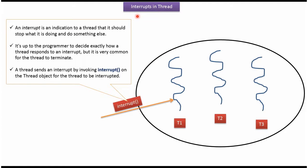Hi, in this video tutorial I will cover interrupts in thread. Once a thread is interrupted, the thread should stop what it is doing and do something else. It is up to the programmer to decide what the thread should do exactly when the thread is interrupted. But it is very common for the thread to terminate.